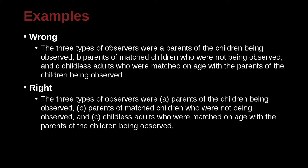The three types of observers were a parents of the children being observed. Oh, I see A. This is an A. That's very hard to read. B, parents of the children who were not being observed, and C, childless adults. So remember we can use parentheses to separate the different parts of the serial list, A, B, and C. Remember, space before, space after, and no space in between.